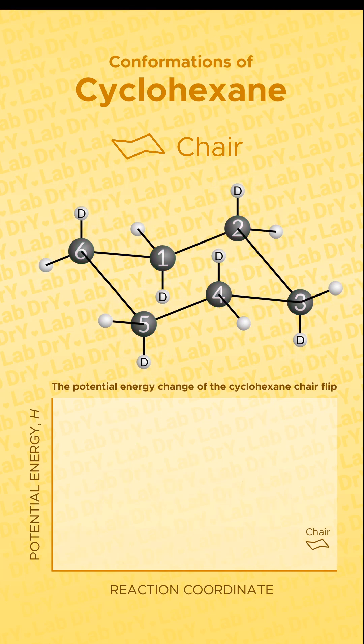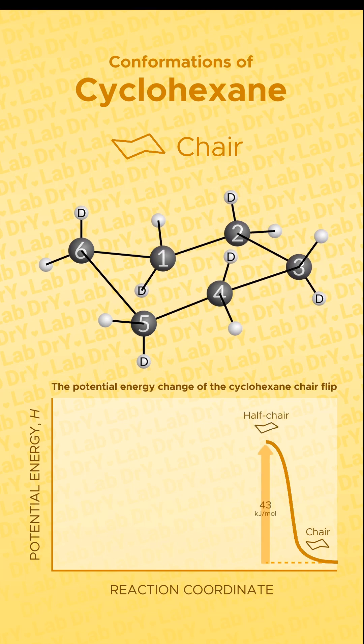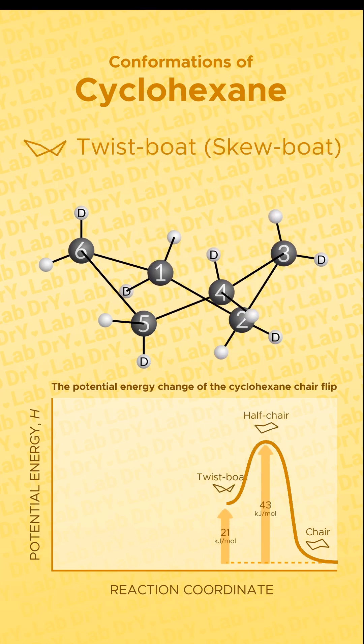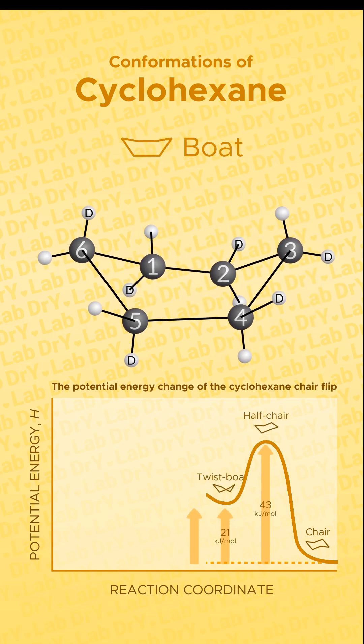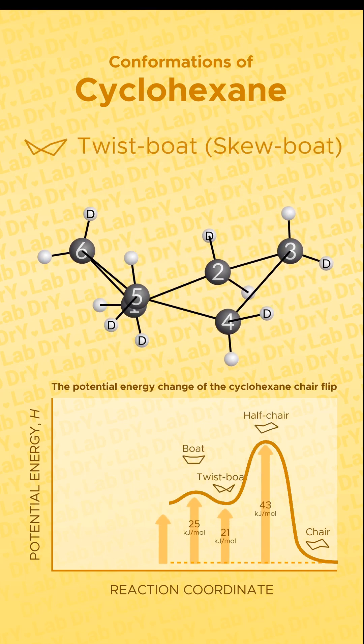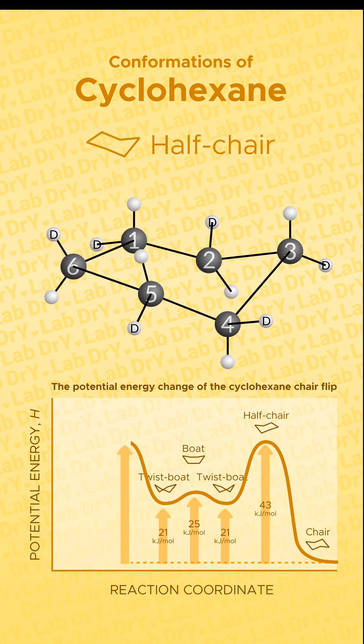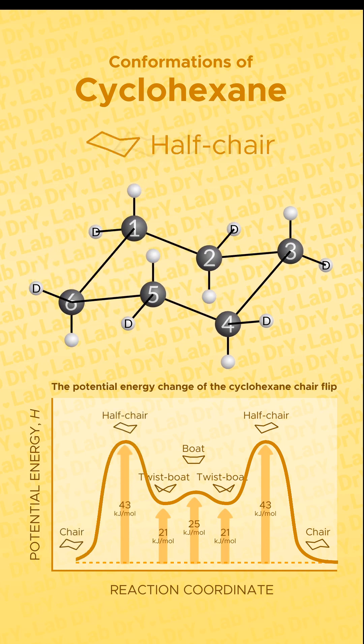This chair cyclohexane goes through the conformations half chair, twist boat, boat, twist boat, and half chair, and arrives at the chair conformation that is the flipped version of the chair before.